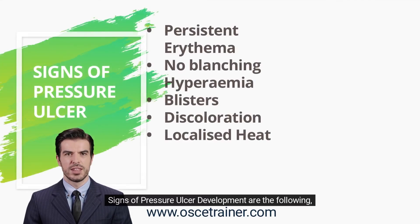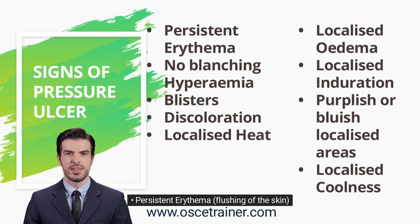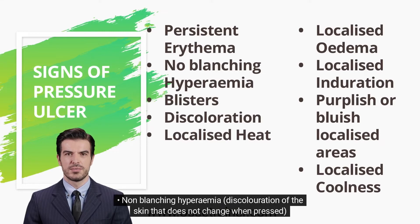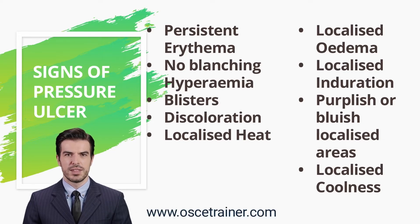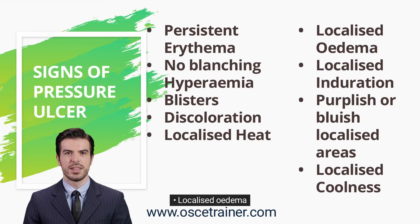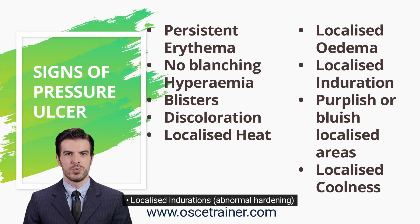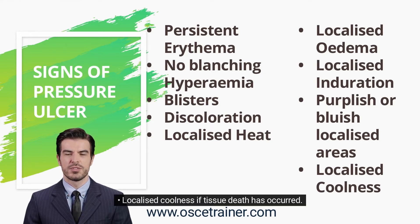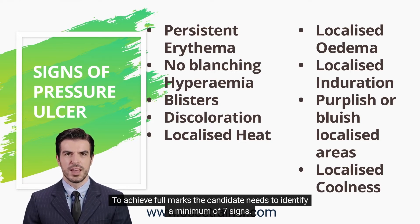Signs of pressure ulcer development include: persistent erythema, flushing of the skin, non-blanching hyperemia, discoloration of the skin that does not change when pressed, blisters, localized heat, localized edema, localized indurations, abnormal hardening, purplish or bluish localized areas, and localized coolness if tissue death has occurred. To achieve full marks, the candidate needs to identify a minimum of 7 signs. For partial marks, a minimum of 4 signs is required.